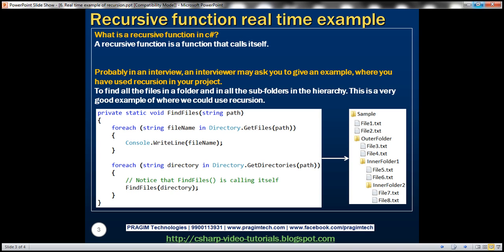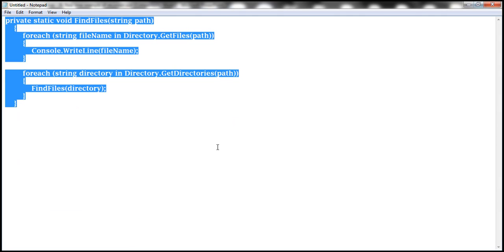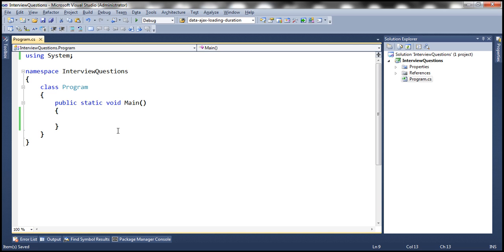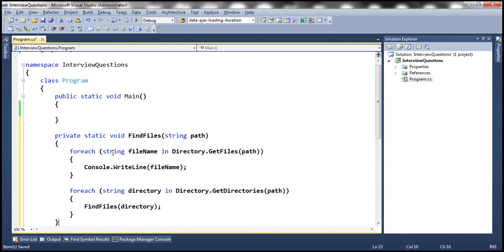To speed things up I have already typed this method. So let's copy it, go back to Visual Studio and paste that here. So this is a static method. So we don't have to create an instance of this class in order to invoke that.